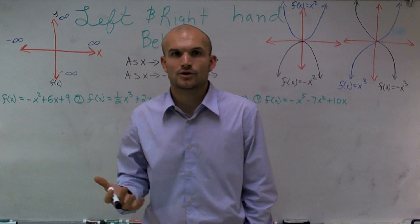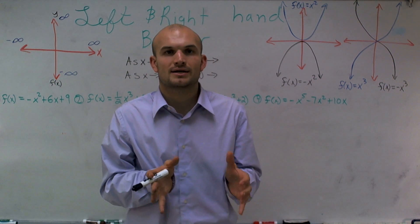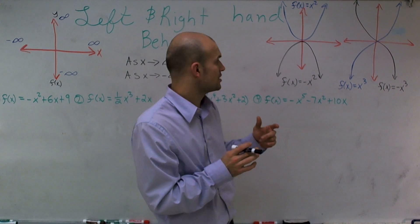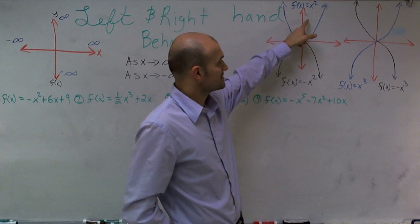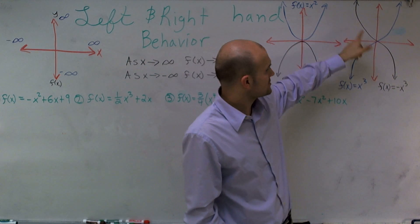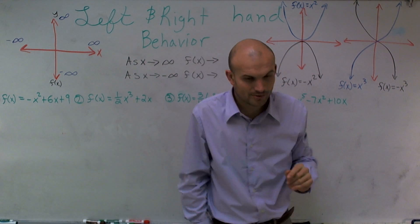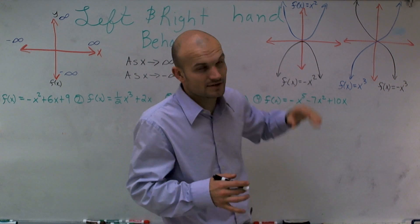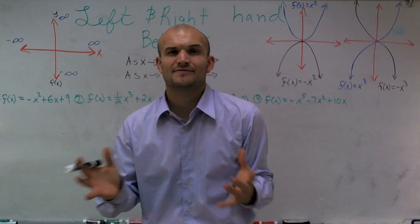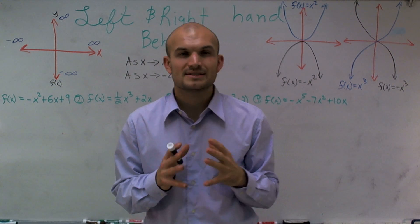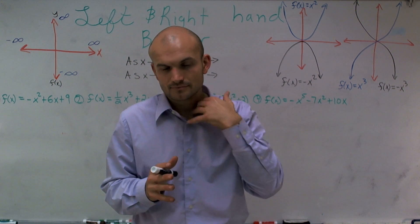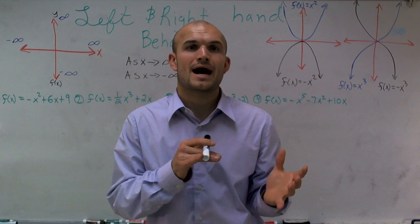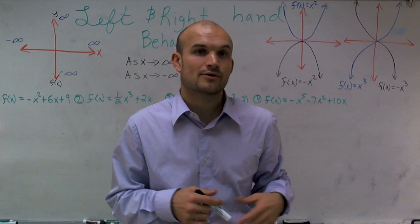The next thing I want to go back through is something you should have prior knowledge with — our two parent functions. I wrote f of x equals x squared and f of x equals x cubed. I also wrote the reflections of these two parent graphs because when I'm doing left and right hand behavior, these are going to be my best clue for determining how I know what's happening with my graph.